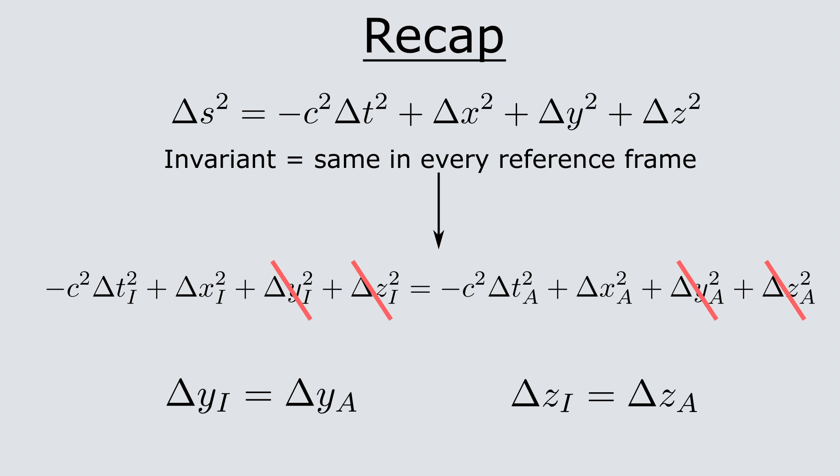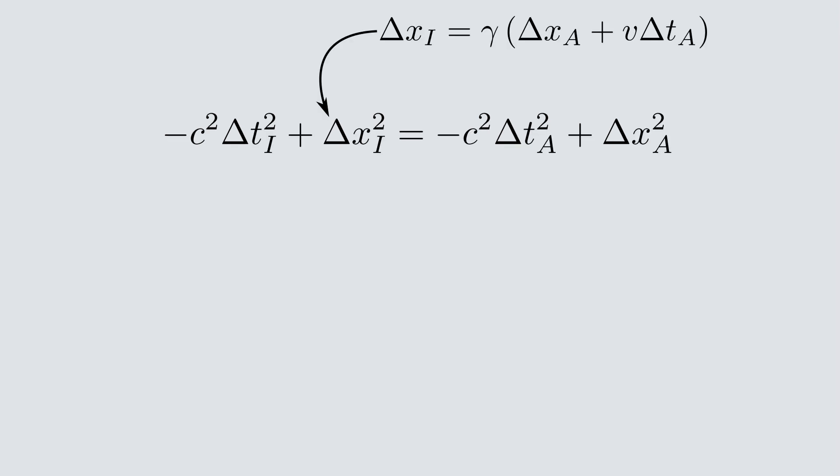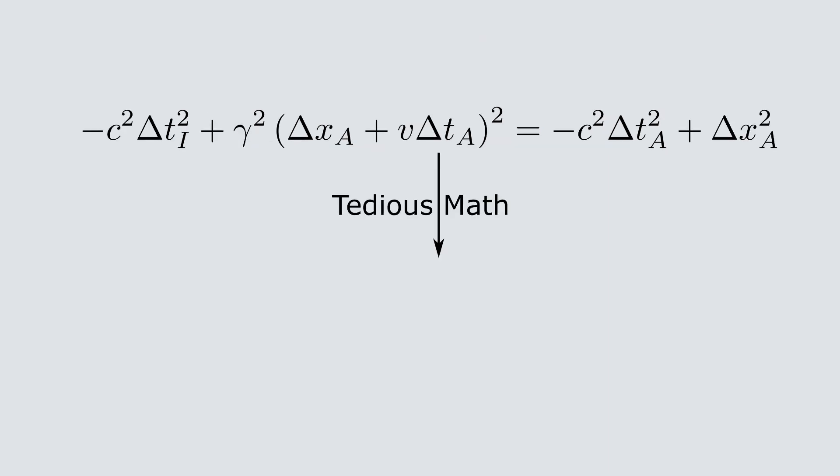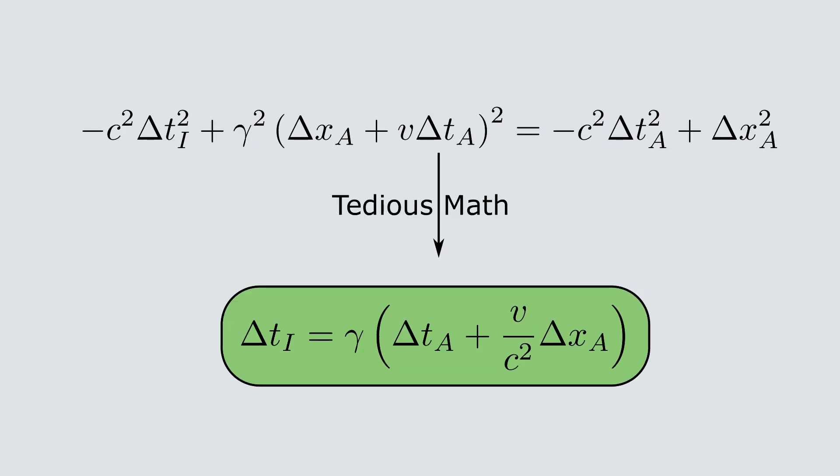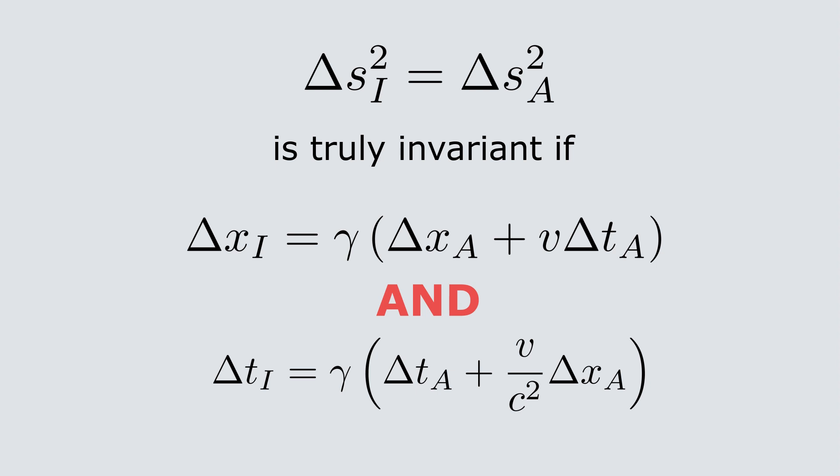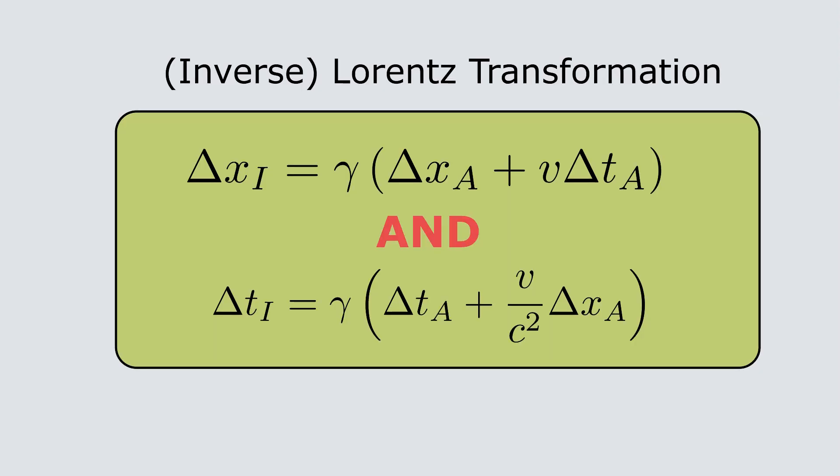We can plug in what we found before for delta xi in terms of delta xa and delta ta, and after some tedious algebra, we find that the two sides are equal if the time elapsed in Isaac's frame is written as gamma times the time elapsed in Albert's frame plus v over c squared times delta xa. Since our invariant quantity now holds true as long as our reference frames are related by these two expressions, we have succeeded in finding the transformation between any two reference frames in special relativity.